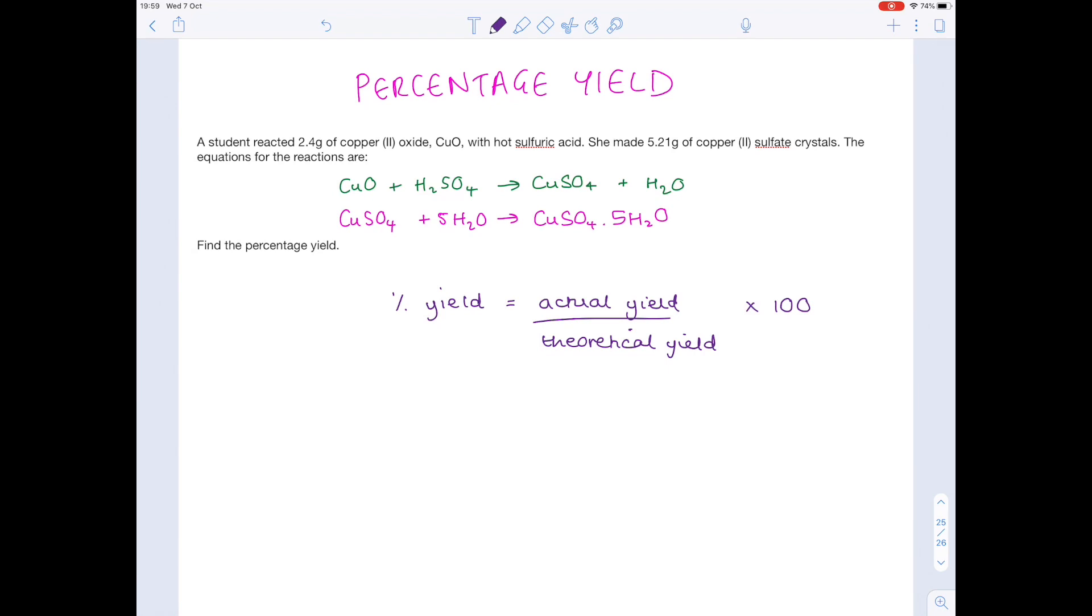If we look back at the question, we can see here that she made 5.21 grams of copper(II) sulfate crystals, so that is our actual yield. However, we do not know the theoretical yield, so we're going to have to do quite a lot of math in order to find that.